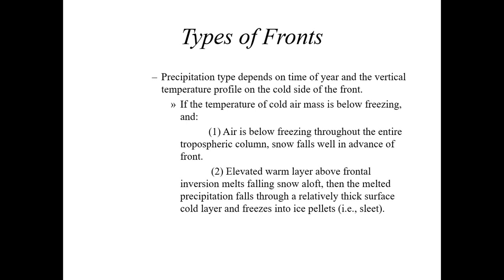The precipitation type is really going to depend on the time of year and the vertical temperature profile on the cold side of the warm front. Generally, if the temperature of that cold air mass north of the warm front is below freezing throughout the entire atmospheric column, you're going to have snow falling well in advance of the warm front. I've seen this growing up in the Midwest — a warm front approaches and it starts off as snow. But as the warm front gets closer and the warm air above 32 degrees Fahrenheit thickens, that area greater than freezing will cause the snow to eventually transition over to a mix of rain and snow, and if you get a strong enough warm front it may eventually turn to a cold rain.